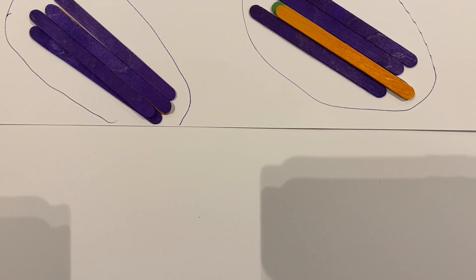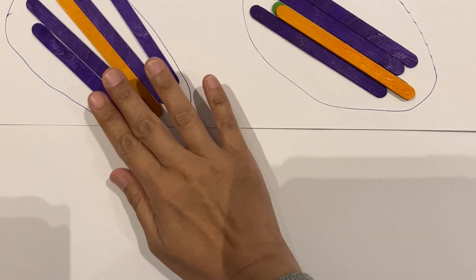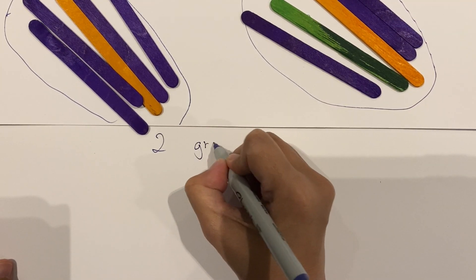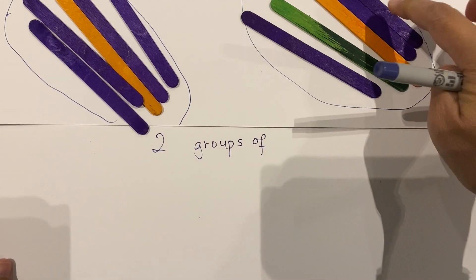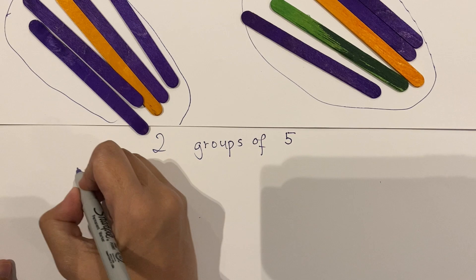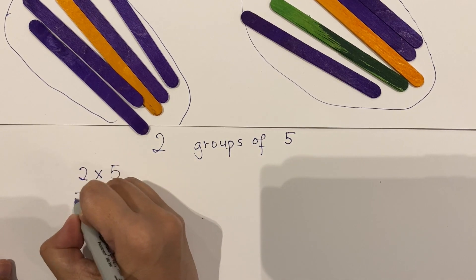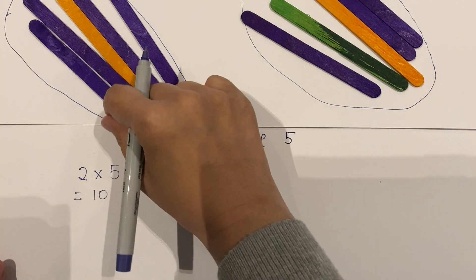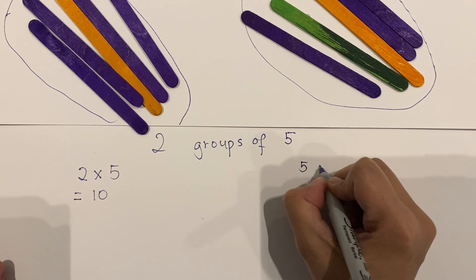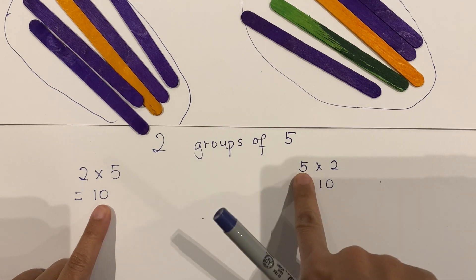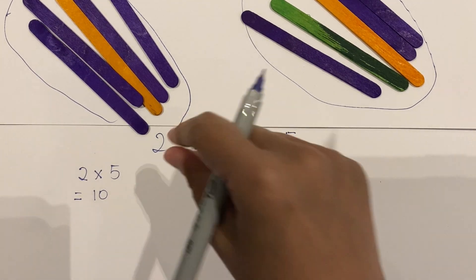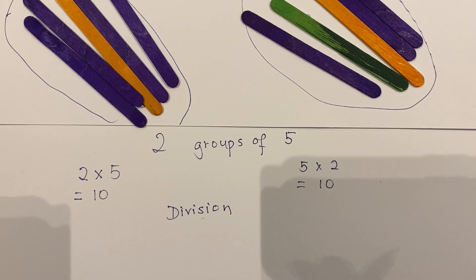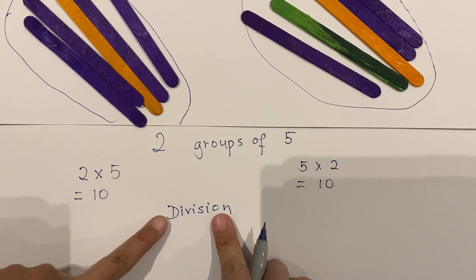Now another example using ice cream sticks. There are two groups of five ice cream sticks each. Using multiplication, that's two multiplied by five equals ten. Another way of writing is five multiplied by two, which also equals ten — but in this case it's five groups of two. How do I change this to division? Remember, multiplication and division are related.